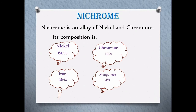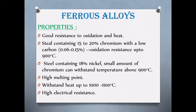We will look at two alloys. The first one is nickel, which contains chromium 12%, iron 26%, and manganese 2%. These are the alloy compositions. The properties of nickel alloys include very low oxidation and good heat resistance.